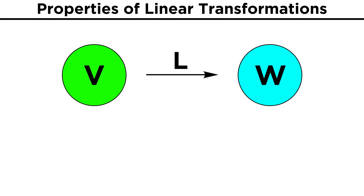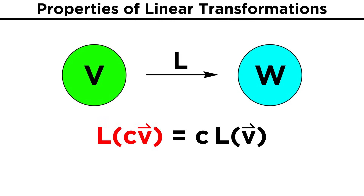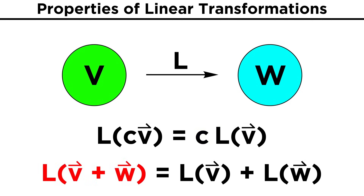There are two important properties for these transformations to qualify as linear. First, transforming the product of a vector V and a scalar C is the same as the product of the scalar and the transformation of the vector V. Second, the transformation of the sum of two vectors V and W is the same as the sum of the transformation of each vector. These are the requirements that must be satisfied in order to be a linear transformation.